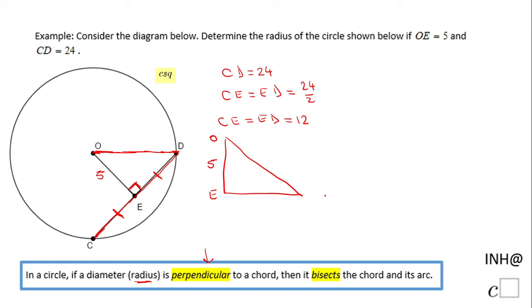This leg, the bottom leg ED, is 12, right? That's half of CD. And we need to find this guy which is OD, the radius. I'm going to call it x. For that reason I'm going to use a squared plus b squared equals c squared.